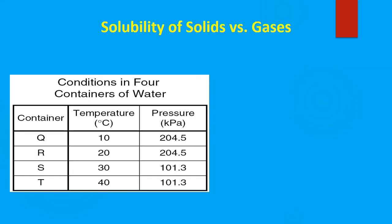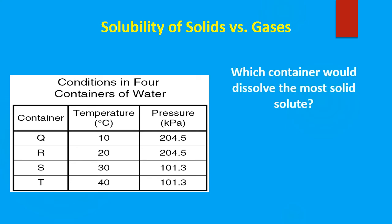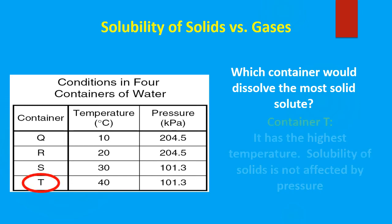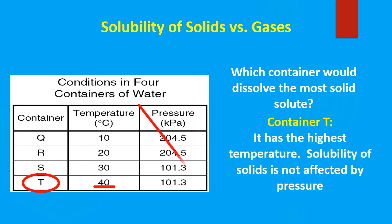Now let's look at solubility of solids versus gases. Which conditions, in four different containers of water, would dissolve the most solid? We have to be careful here — pressure has no effect on the solubility of a solid, so we can ignore that. We know that the solubility of a solid increases with temperature, so we're looking for the highest temperature, which is 40 degrees Celsius in container T. So that will be our answer.